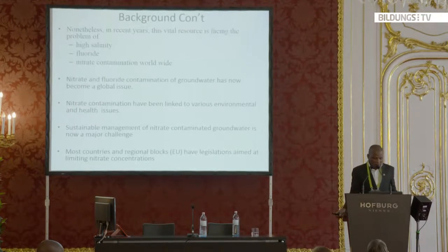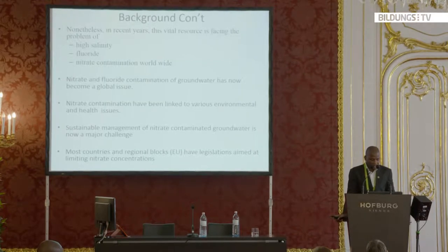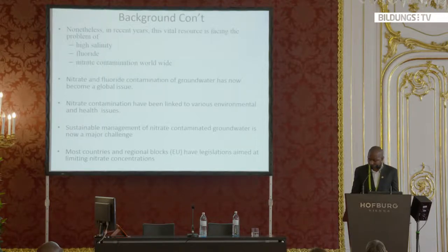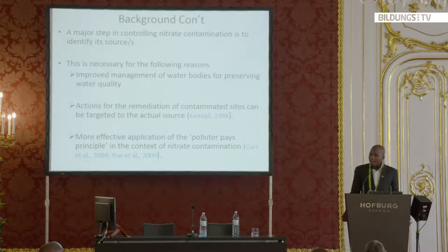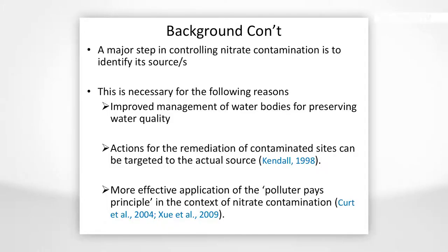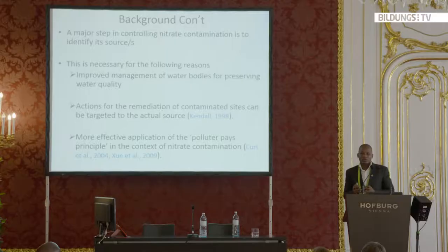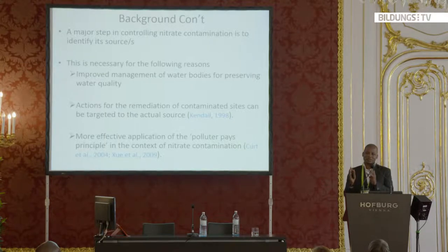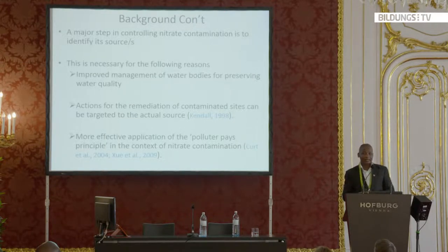A lot of studies have been done in Asia, Africa, and in some parts of Europe, which reported high levels of nitrate and fluoride contamination in groundwater. Most countries and regional blocks now have legislation to control this pollutant. But one major step in controlling nitrate contamination is to identify the exact source where the nitrate is coming from. This improves management practices and policy strategies, makes action more targeted, and allows us to hold those responsible for the pollution accountable.